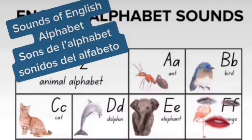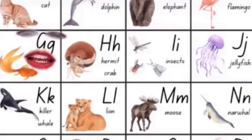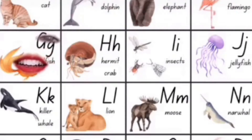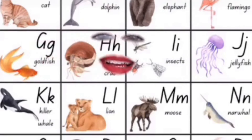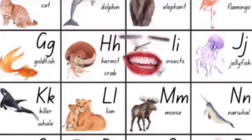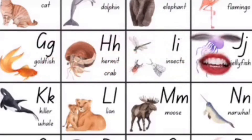F, F, Flamingo. G, G, Goldfish. H, H, Hermit Crab. I, I, Insects.